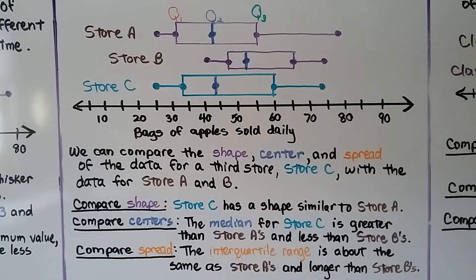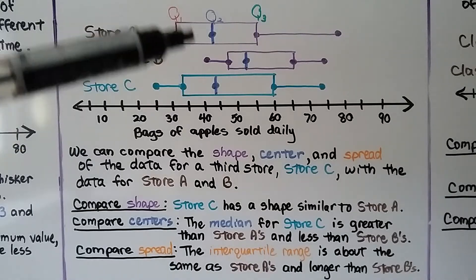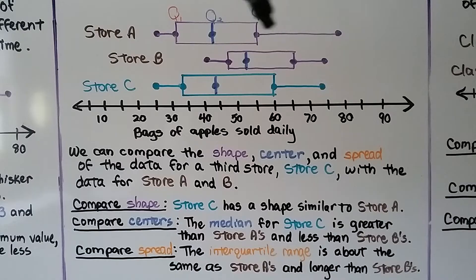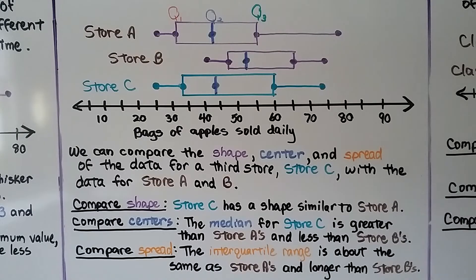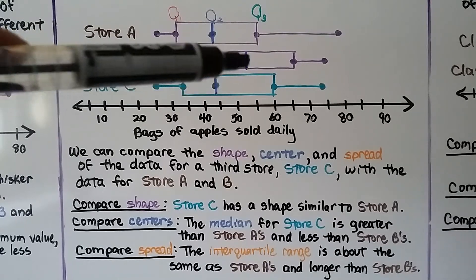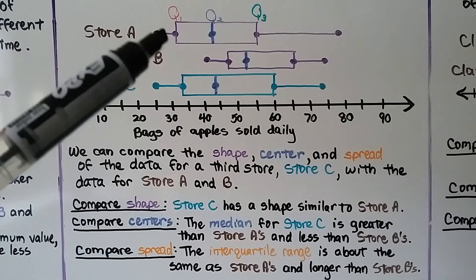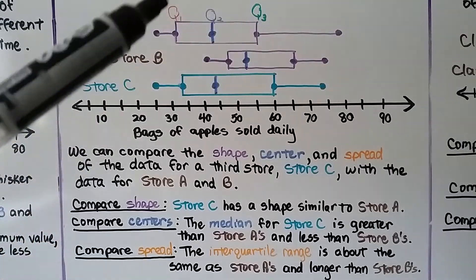We can compare the shape, center, and spread of the data for a third store, store C, with the data for store A and B. Comparing shape, store C has a shape similar to store A — it's got a long whisker on one side and a short one on the other, just like store A, while store B's whiskers are almost the same length. Store C's median is greater than store A's and less than store B's. For spread, the interquartile range is about the same as store A's and longer than store B's. Remember, the interquartile range is the length of the box — it's Q3 minus Q1.